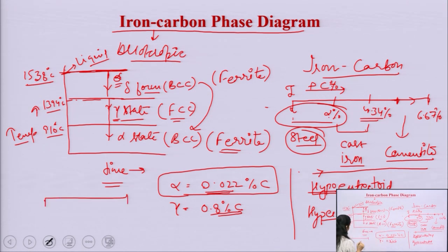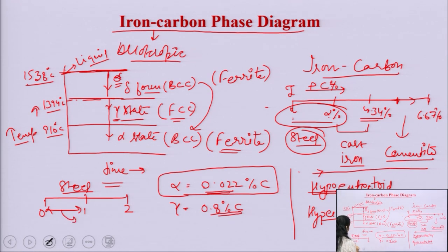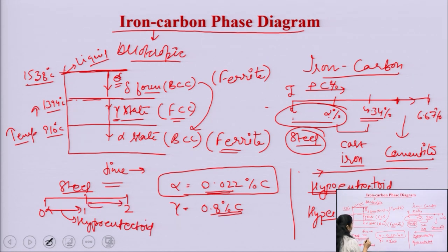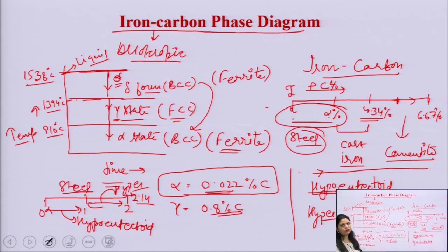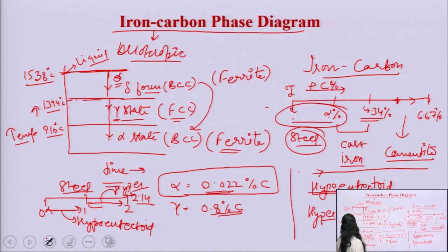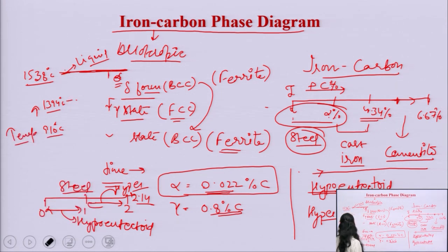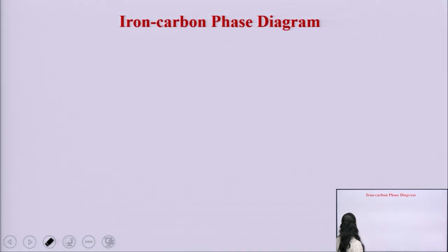In the steel range, from 0 to 0.8% carbon, we get hypo eutectoid steel. From 0.8% to 2.14% carbon, we get hyper eutectoid steel. We should know all these terms before studying the iron carbon phase diagram, as we will use them throughout.